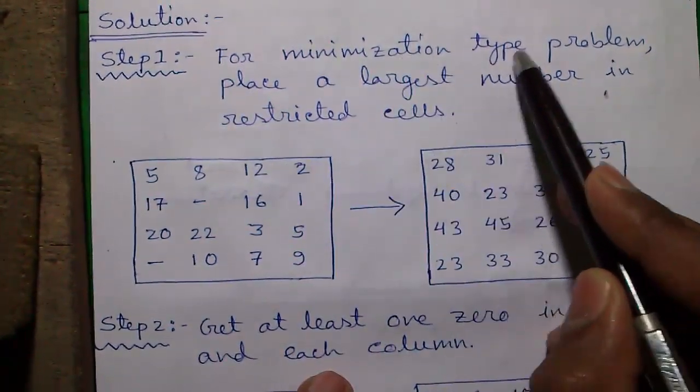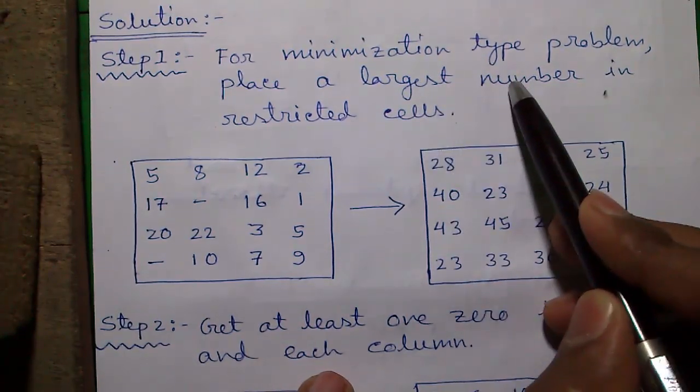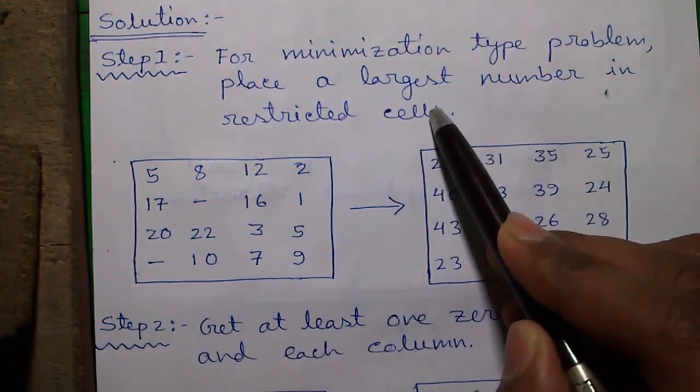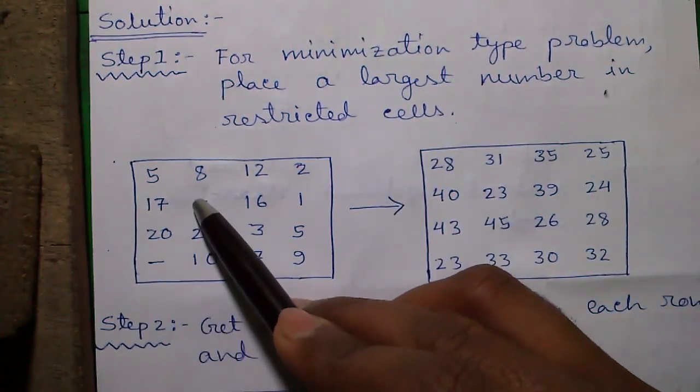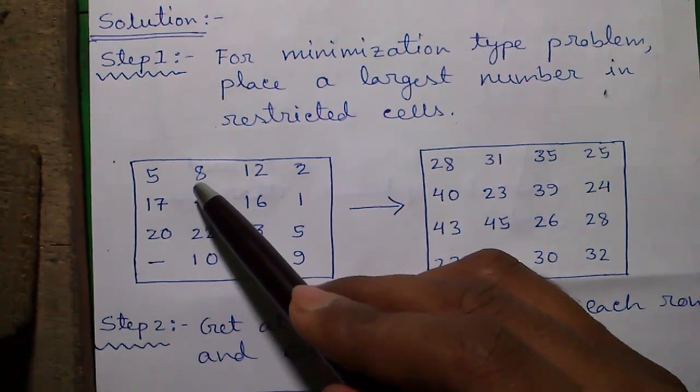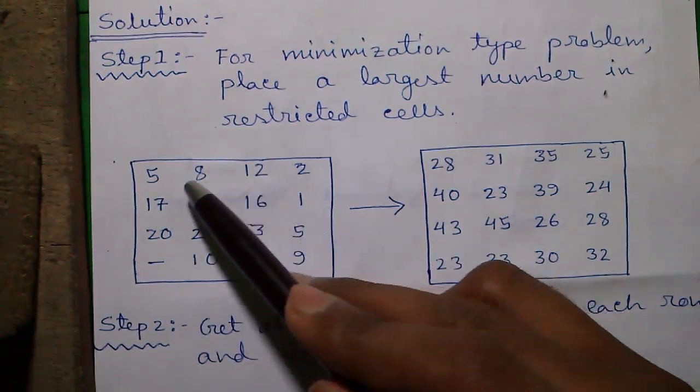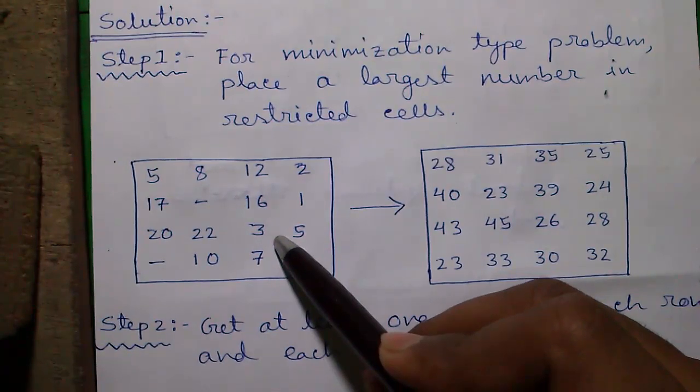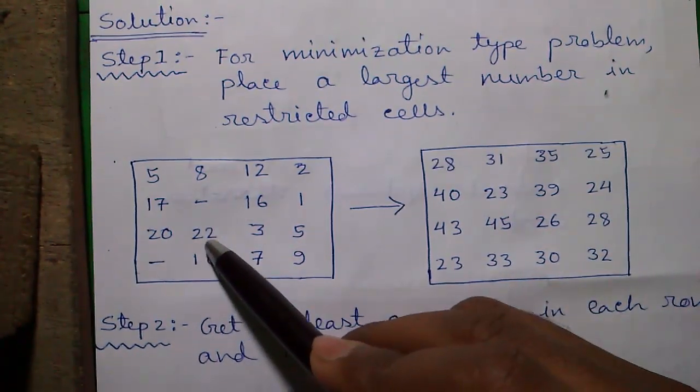Step 1: For minimization type problem place a largest number in the restricted cell. These are restricted cells. So we look for a largest number. We will scan each number and look for the largest number. Here the largest number is 22.